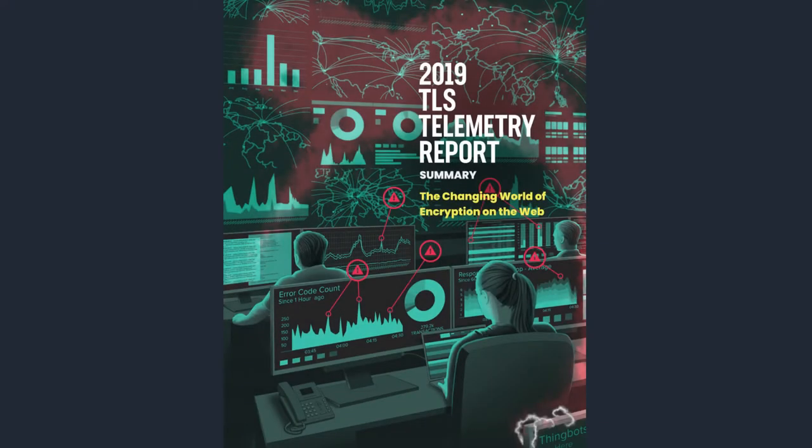the F5 Labs threat intelligence team recently published their 2019 TLS telemetry report. Transport layer security is the current iteration of SSL and over 86% of web pages are delivered over secure HTTPS connections. Encryption on the web is constantly evolving and TLS is the protocol of choice.